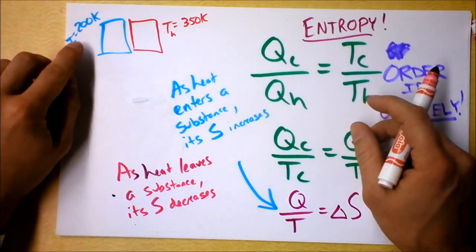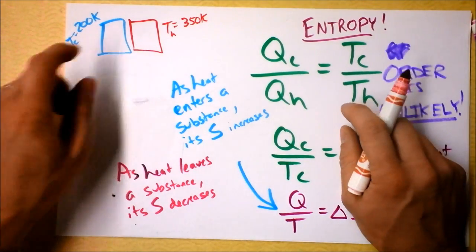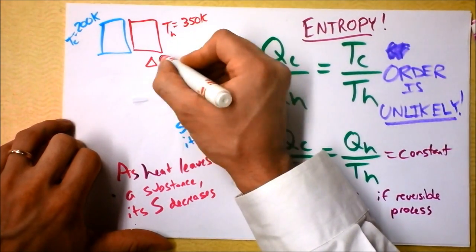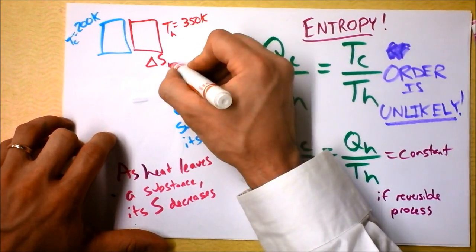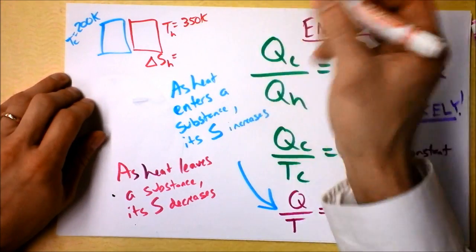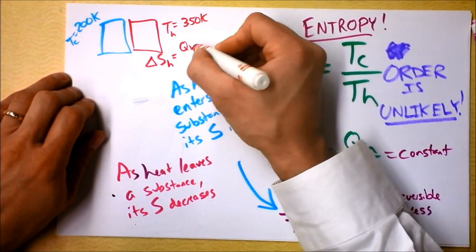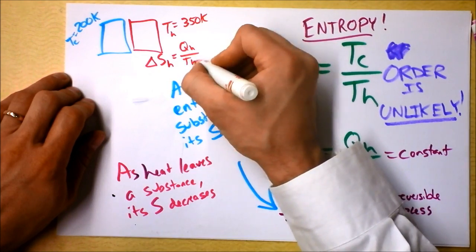I agree with you that this one will be gaining entropy and that one will be losing entropy, but let's look in detail about what that's going to be. Delta S for the hot will be Q hot divided by T hot.